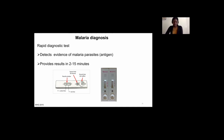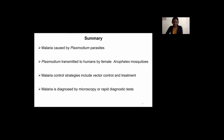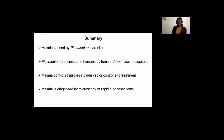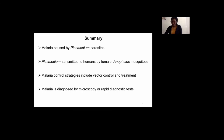This is where I will end my talk. In brief summary: malaria is caused by parasites of the genus Plasmodium, transmitted to humans by female Anopheles mosquitoes. The most effective control strategies so far are vector control and management of clinical cases. The most commonly used diagnostic methods are microscopy and rapid diagnostic tests. Thank you.